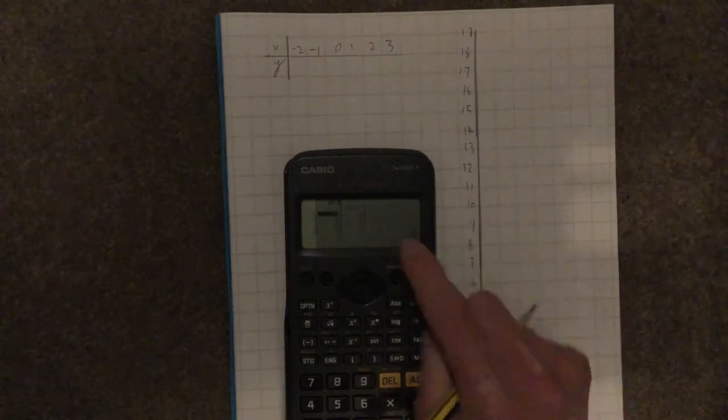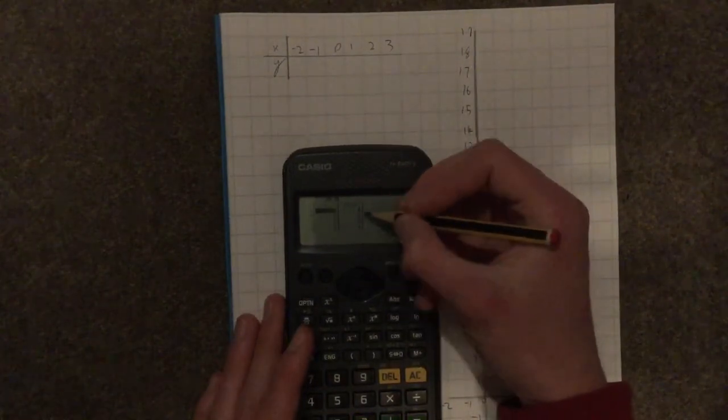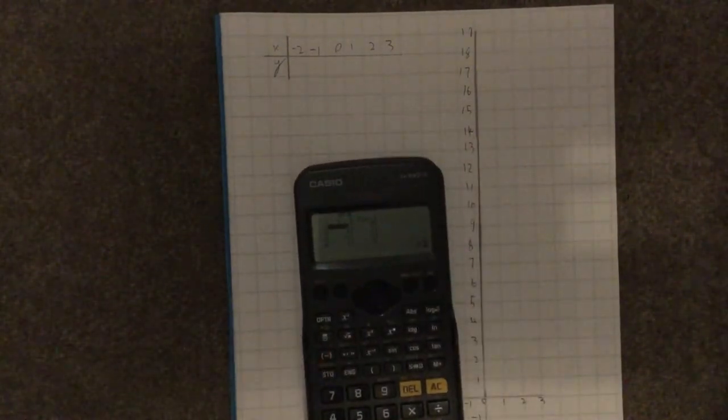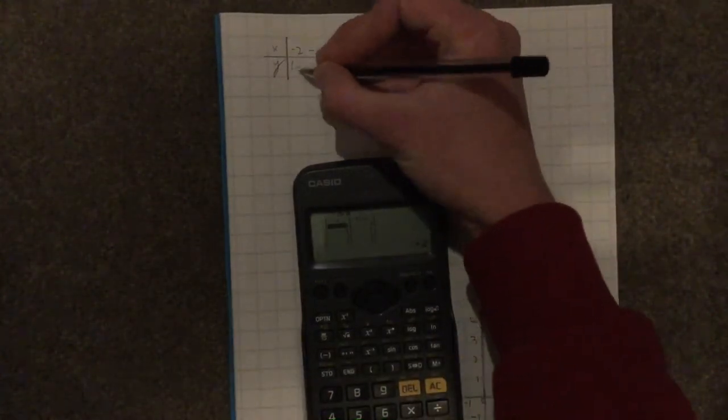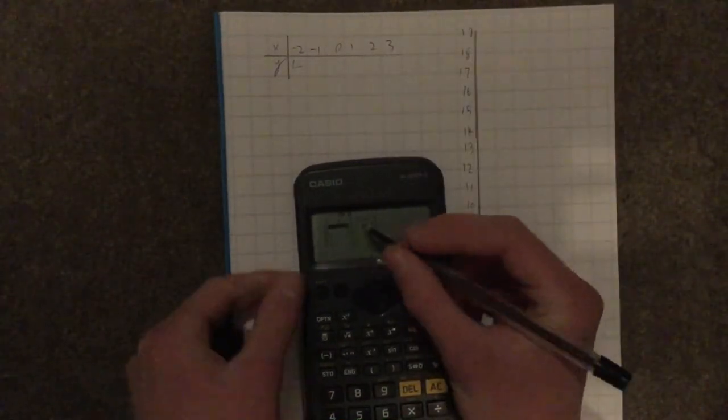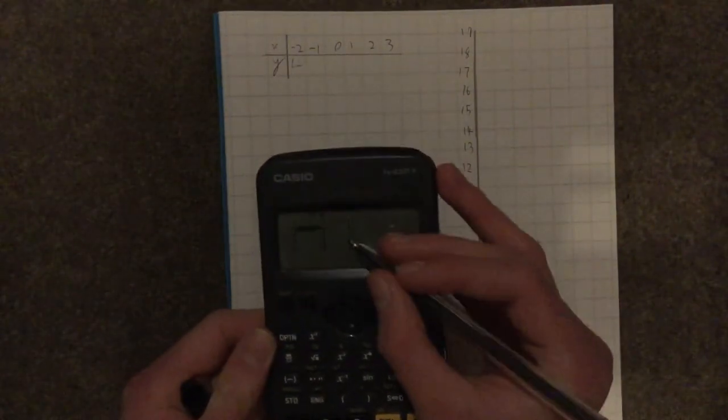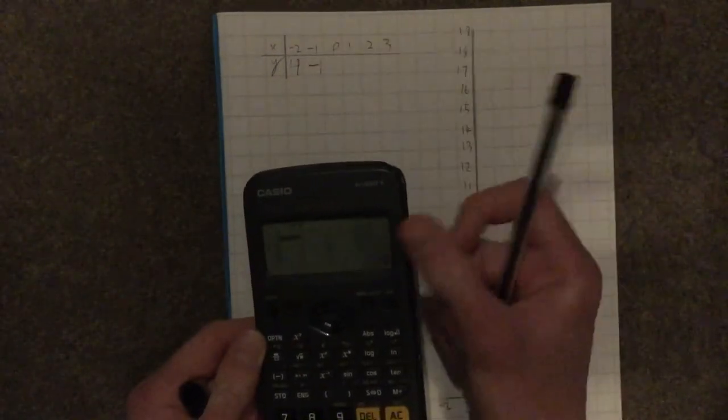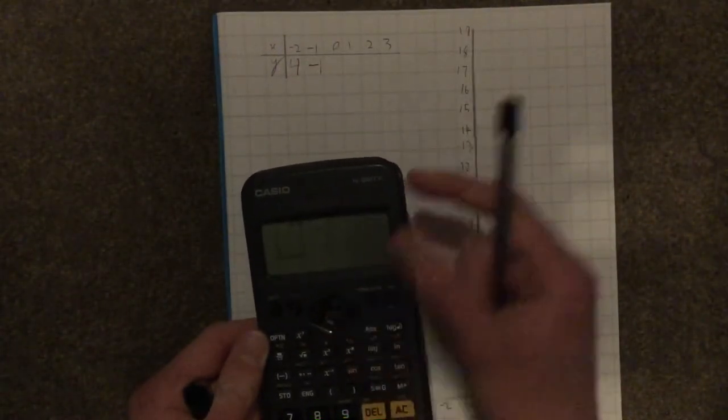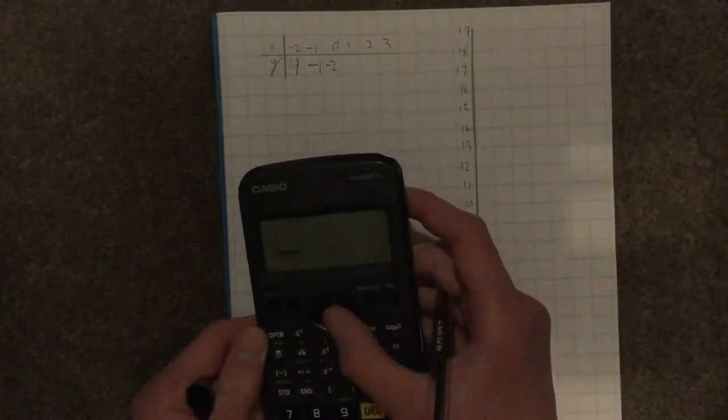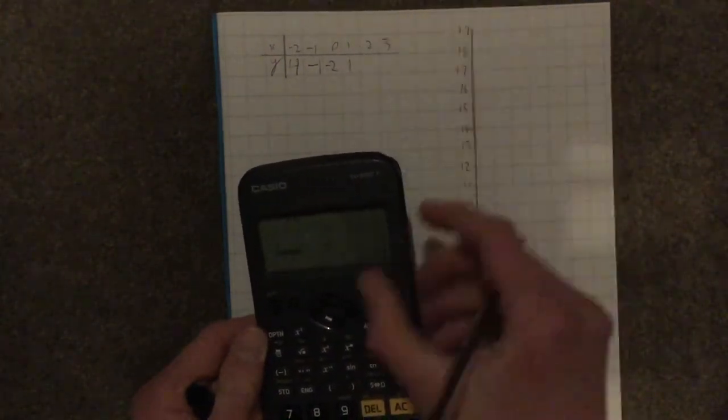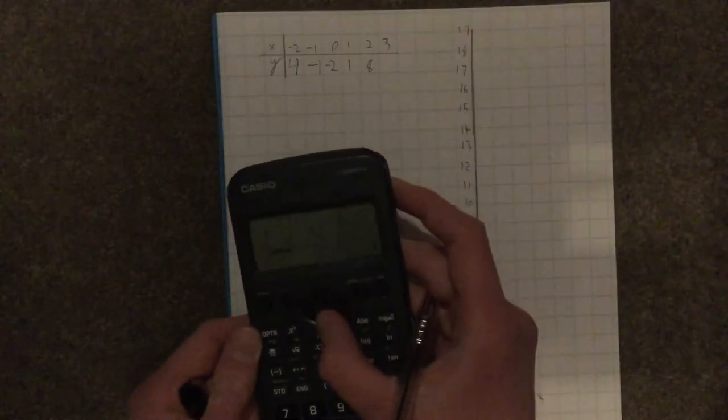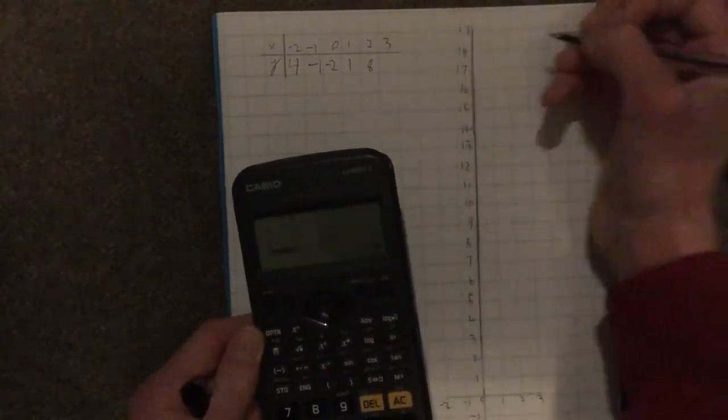And we are presented with the table once again. So, here we have the value of x, and this is the value of y. So, here, negative 2, we can enter in 4, and then negative 1 equals negative 1, so we can enter that in. 0 comes out as negative 2, 1 comes out as 1, 2 comes out as 8, and then 3 comes out as 19.